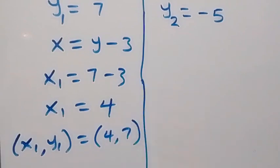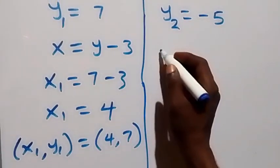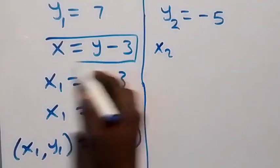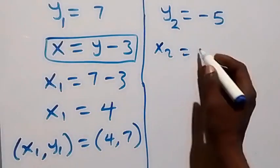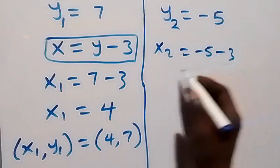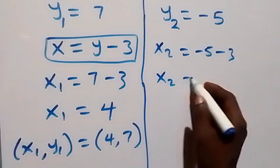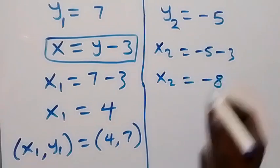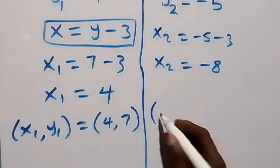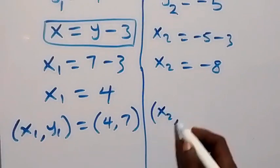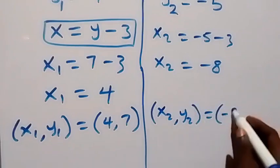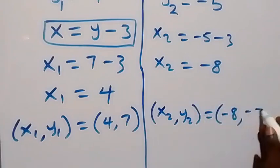Similarly, we can get x2 using the same relation x equals y minus 3. So x2 equals y2 minus 3, which is minus 5 minus 3, giving x2 equals minus 8. So x2 comma y2 equals minus 8 comma minus 5.